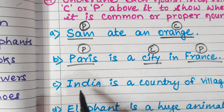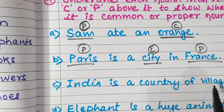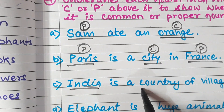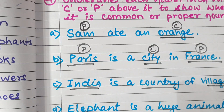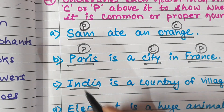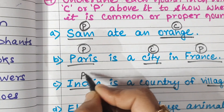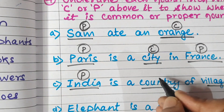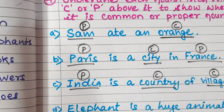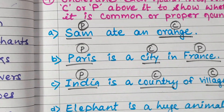India is a country of villages. India, country and villages are three noun words. India is a proper noun. Country is a common noun. Village is also a common noun.